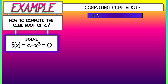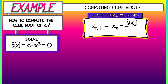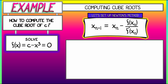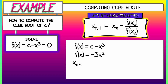So let's set up Newton's method. Recall that xₙ₊₁ equals xₙ minus f of xₙ divided by f prime at xₙ. In this case, our f is c minus x cubed. The derivative of that is minus 3x squared. So Newton's method gives xₙ₊₁ equals xₙ minus the quantity c minus xₙ cubed, divided by minus 3xₙ squared.